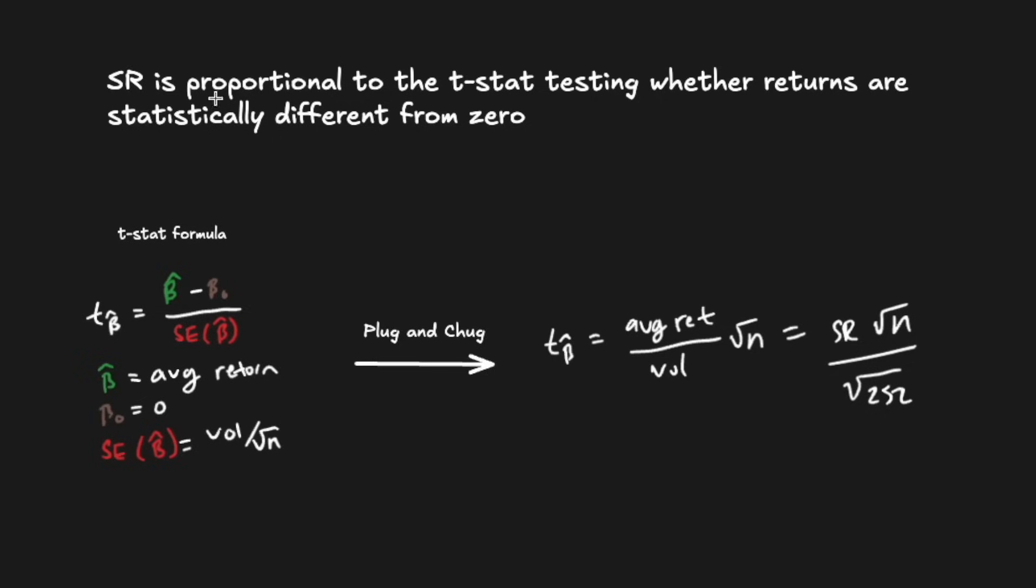The interesting thing about t-stats and Sharpes is that it's not too hard to show that the t-stat is actually proportional to the Sharpe ratio. And if you're interested, you could actually back this out based on the formula for the t-stat. So here's the formula for the t-stat. Here are the values for the variables that go into the t-stat.